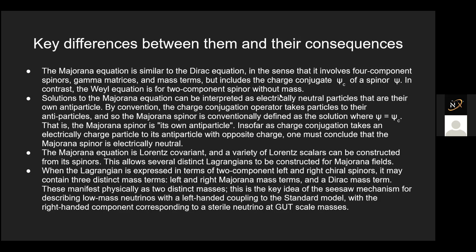Solutions to the Majorana equation can be interpreted as electrically neutral particles that are their own antiparticle. Charge conjugation is not just switching electric charge — there are color charges, weak charges, weak hypercharges, and all of them. If you invert all of them and the particle remains the same, that's charge conjugation as identity. If x equals minus x, this is only possible if x equals zero, so a Majorana particle has to be neutral — that's called a Majorana fermion.